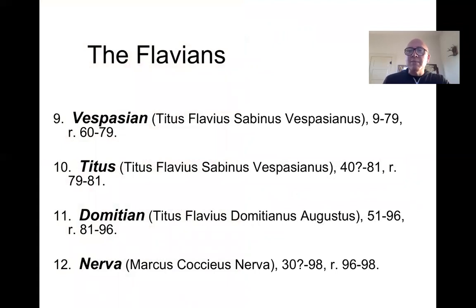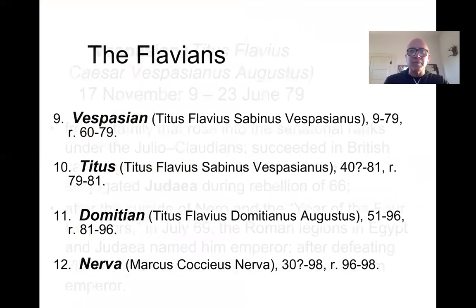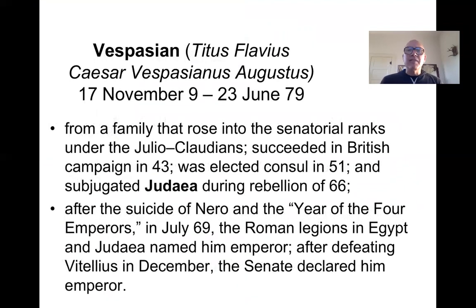Vespasian is the man who, after that very unstable year in Roman politics, would then assume absolute power over the state. He was then followed by his son Titus and then successive heirs. Titus Flavius Caesar Vespasianus Augustus — Vespasian as he became known — was born on November 17th of the year 9 and died in the year 79, so he had a very long life. He came from a family that rose to power during the rise of the Julio-Claudians, particularly in the Senate, so he was an aristocrat.